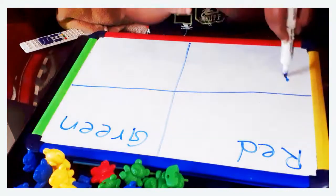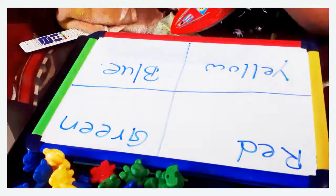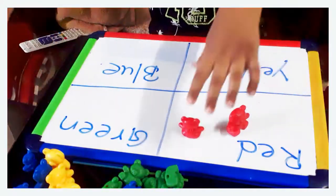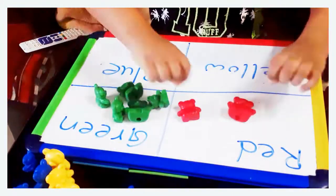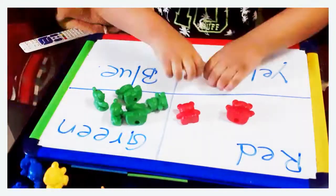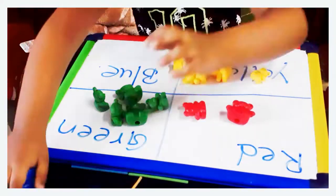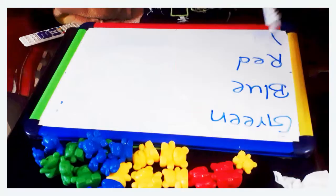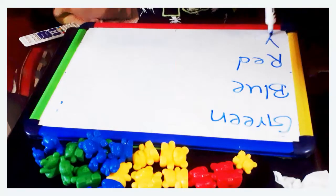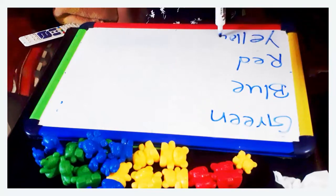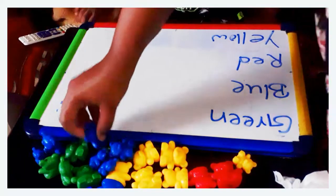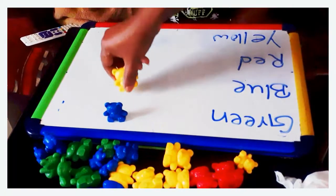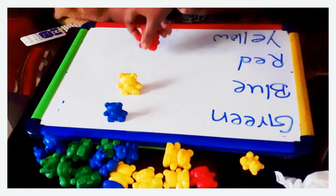The next activity was color sorting. As I told you, I use these manipulatives in many different ways. These are some of the summaries that I use them for. I have divided the board in four parts, and the next activity he is planning to do is matching the colors.